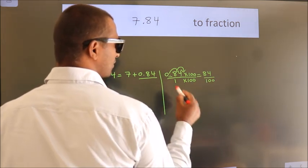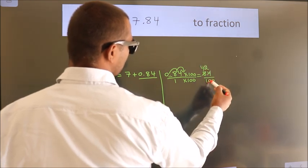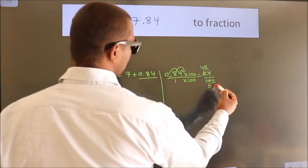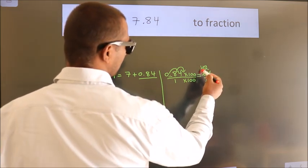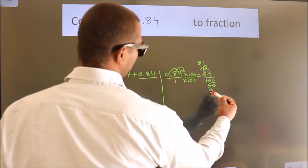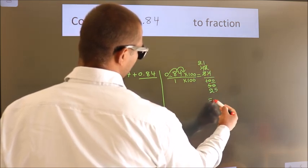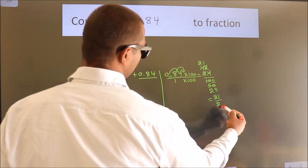Now cancel with 2. Two fours, two twos, two fives, this zero down. Cancel with 2 again. Two twos, two ones, two twenty-fives. So the fraction we got is 21 by 25.